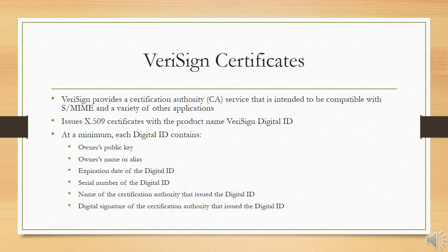The information contained in a digital ID depends on the type of digital ID and its use. At a minimum, each digital ID contains the owner's public key, owner's name or alias, expiration date of the digital ID, serial number of the digital ID, name of the certification authority that issued the digital ID, and the digital signature of the ID. Digital IDs can also contain other user-supplied information including address, email ID, and basic registration information such as country, zip code, age, and gender.